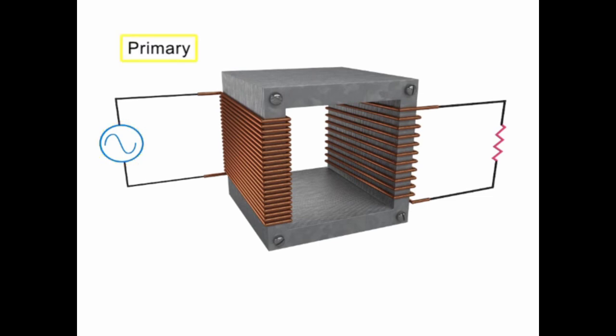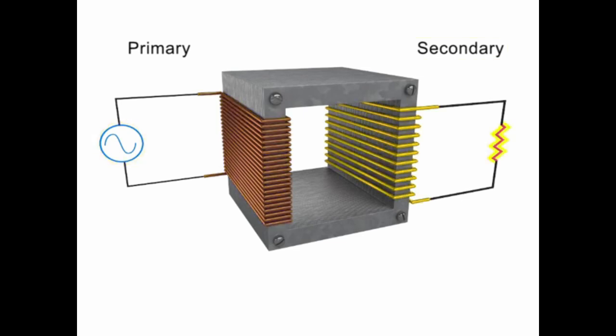One coil is connected to the AC input voltage and is called the primary coil, and the other coil is connected to an output circuit with a load resistance and is called the secondary coil. Both coils are physically insulated from each other and do not have any physical electrical connection. This gives a transformer its unique quality.